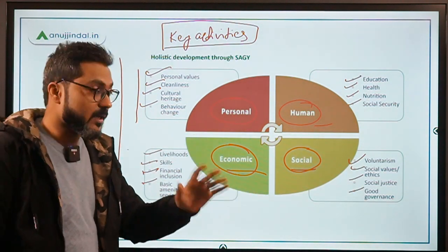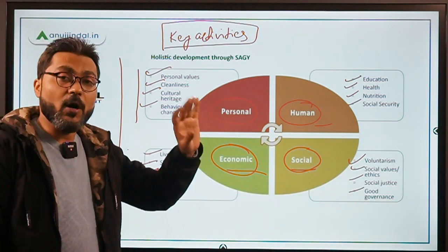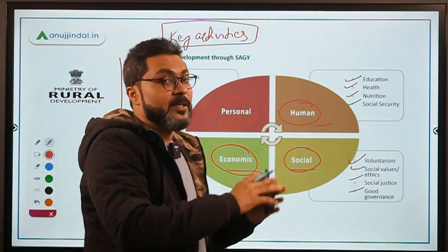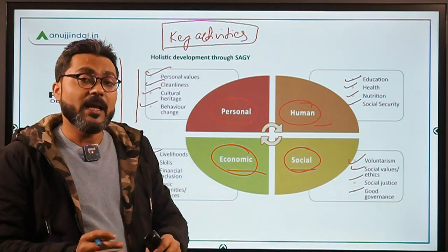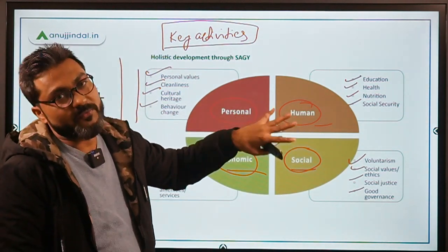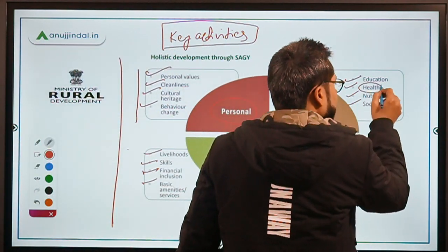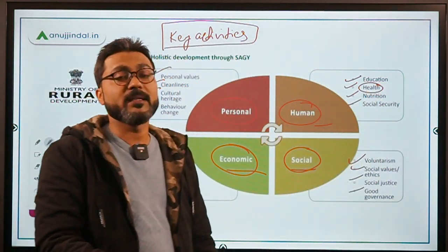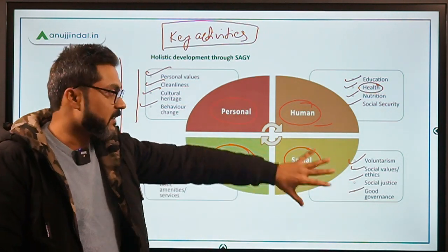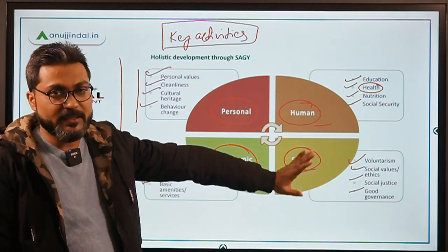How do we achieve all this development? The approach is through various existing schemes of the central government. Through those schemes, development will be provided to the villages. For example, there are various schemes in the health sector and education sector, and those schemes will be properly implemented in these villages, thereby providing development to them.